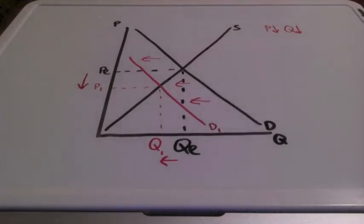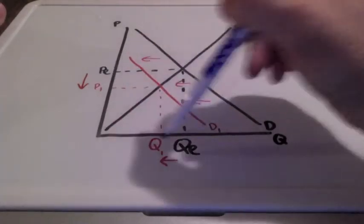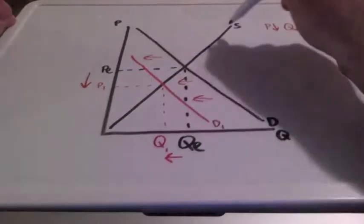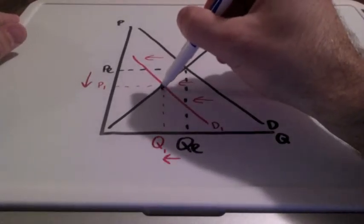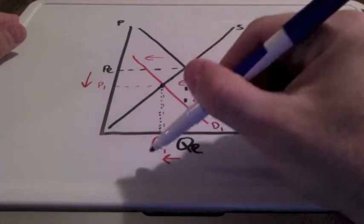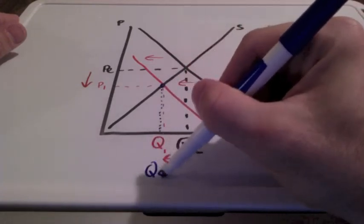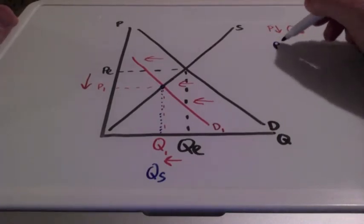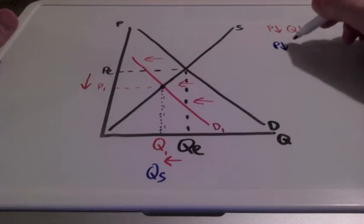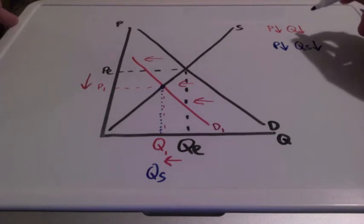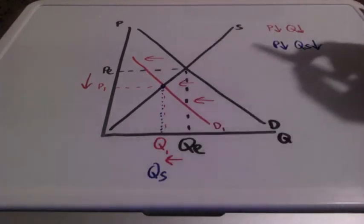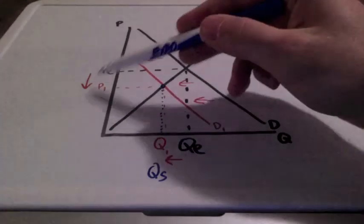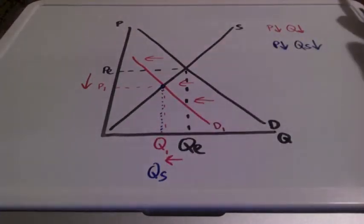I want you to pay attention to quantity supplied and price. Watch this curve — bringing this all the way down. This quantity is showing the quantity supplied of production. The law of supply says when prices go down, the quantity supplied will also decrease. Suppliers will decrease quantity supplied and decrease their costs when nobody is buying their products.